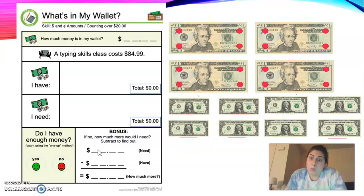Our last one. Whoa, that's a lot of money, but I know you've got this and you can count it. We're working on taking a typing skills class which costs $84.99. Make sure you count how much money you have on this page and then you're able to fill out the rest. Again, if your answer is no, you're going to need to do the bonus.